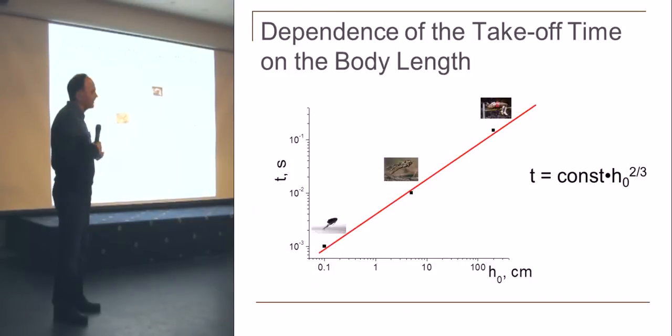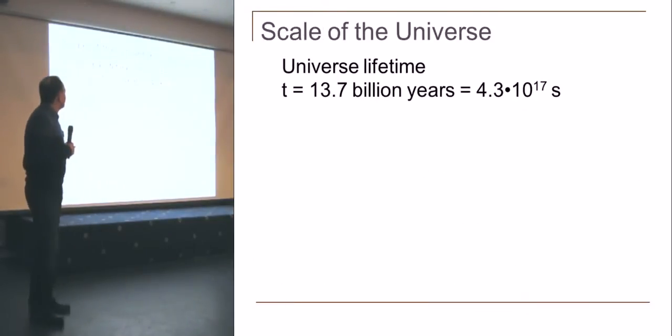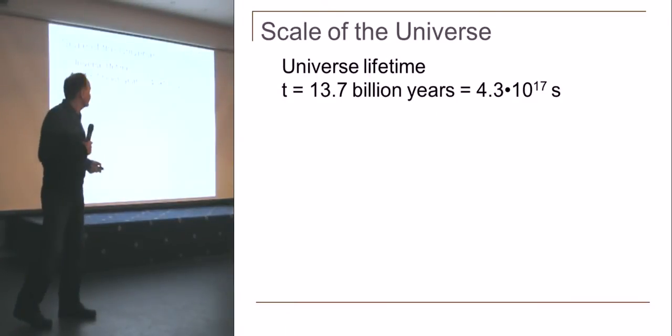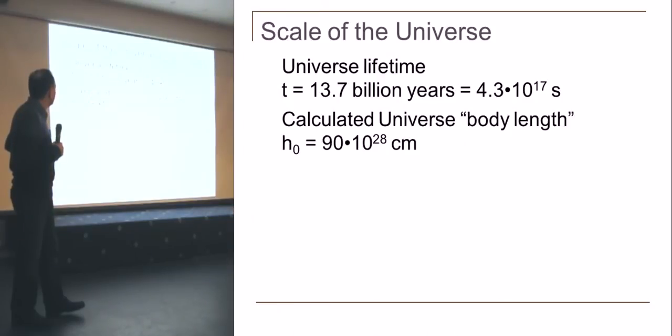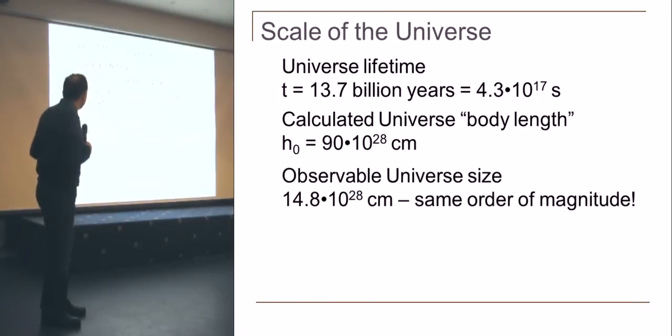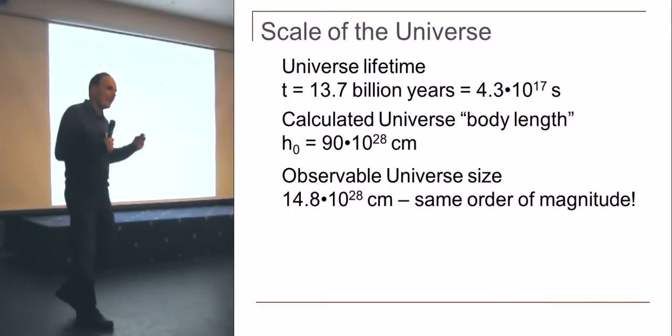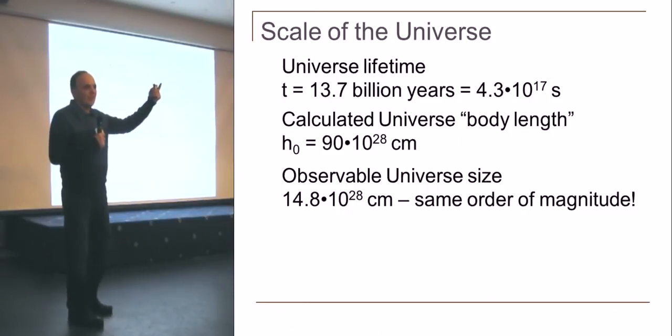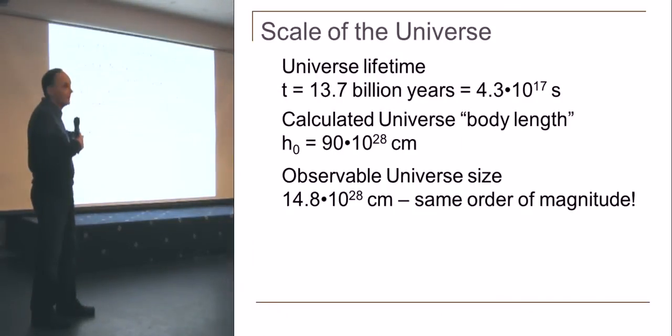Let us now shift by more than 20 orders of magnitude and go to the biggest time scale existing in the universe: the lifetime of the universe. Let's extrapolate this curve there. What do we see? The universal lifetime is 4.3 by 10 to the 17 seconds. The calculated from that formula universal body length would be 90 by 10 to the 28 centimeters. If we take the observable universe size, it's the same order of magnitude. I remind you, we extrapolated through 15 or almost 20 orders of magnitude.